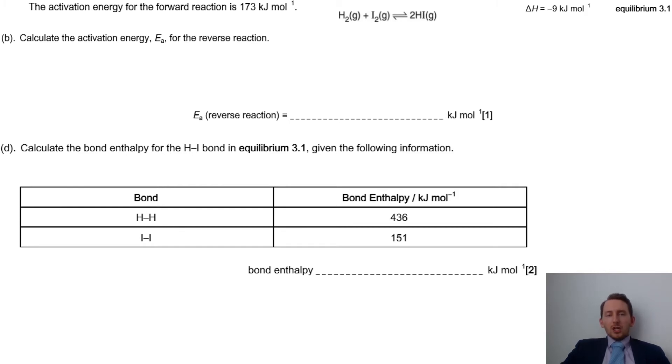We're asked to work out the activation energy for the reverse reaction. So we've been told the value for the forward reaction. Now, one mistake can be people just think, OK, well, it's the same for the reverse. It's 173. That's not the case. If we look at the forward reaction, which is exothermic, well, that means the reverse reaction must be endothermic.